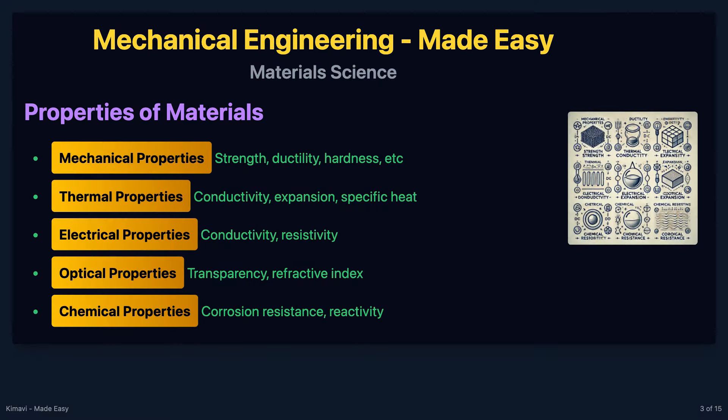Materials have a variety of properties that determine their suitability for different applications. These properties can be broadly classified into mechanical, thermal, electrical, optical, and chemical properties.